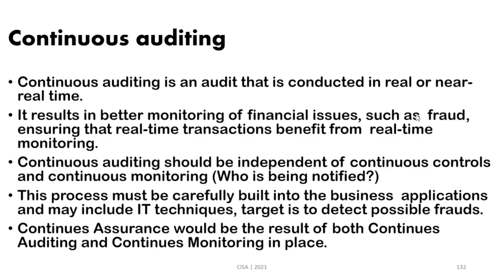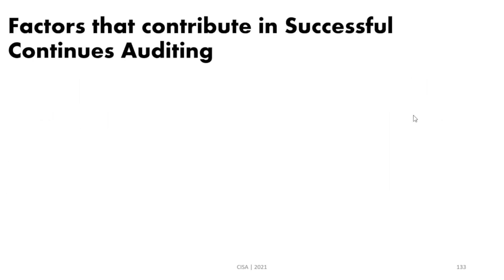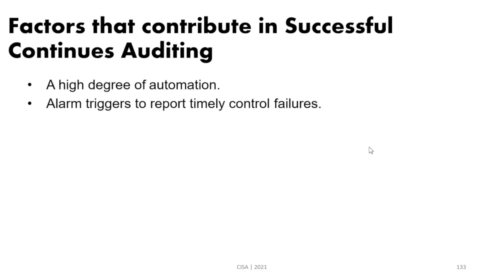Factors that contribute to successful continuous auditing include: automation, which is an important component; and alarms — the continuous auditing tool must be able to trigger an alarm whenever an irregularity or any defined exception occurs.